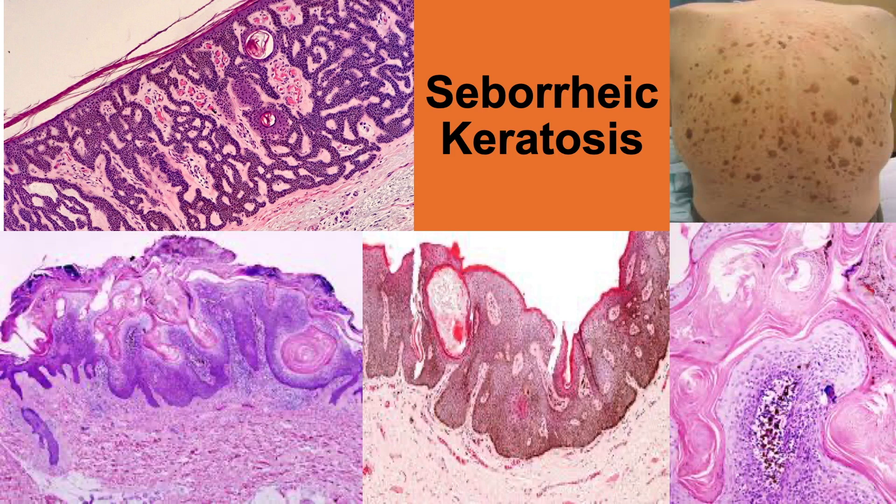One more pattern is psoriasiform keratosis, in which features of seborrheic keratosis and psoriasis are intermixed. On immunohistochemistry, seborrheic keratosis will be positive for low molecular weight cytokeratin, however negative for high molecular weight cytokeratins.